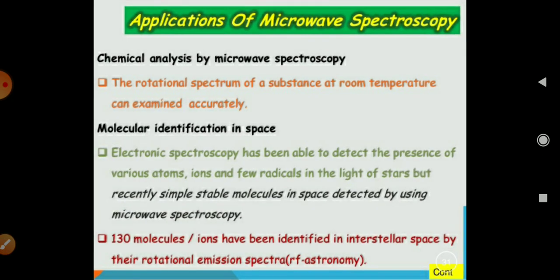And the applications of microwave spectroscopy. The microwave spectroscopy is used in chemical analysis and the rotation spectra of substance at room temperature can be examined and it can also be used in molecule identification in space. The electronic spectroscopy has been able to detect the presence of various atoms, ions and a few radicals in the light of stars.